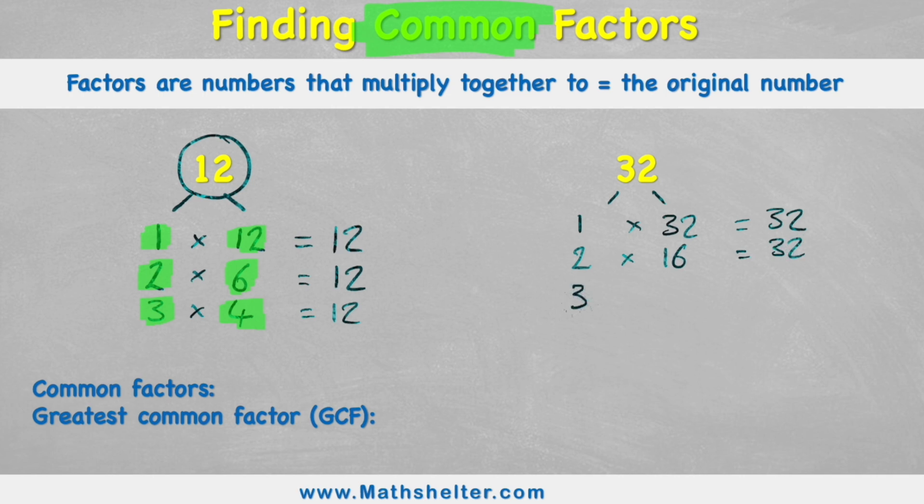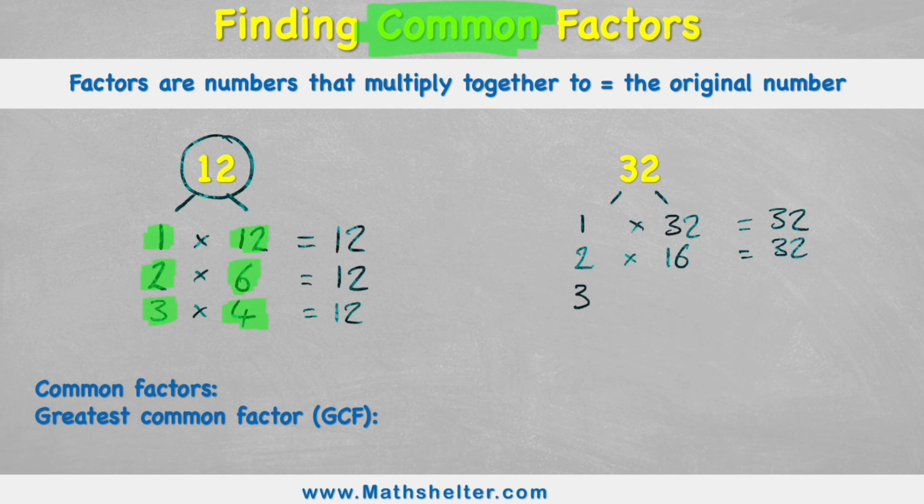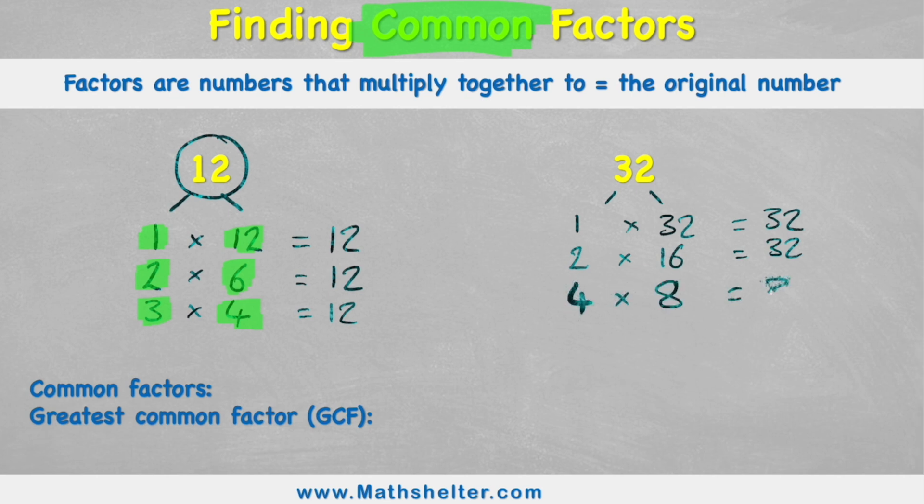But now when I check 3, I can't find a multiple that multiplies with 3 to equal 32, because if I did 3 times 10 for example that would be 30, but if I did 3 times 11 that would be 33, so it misses 32. So 3 doesn't work. Let's try 4. 4 multiplied by 8 equals 32.